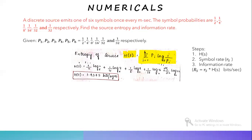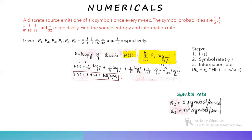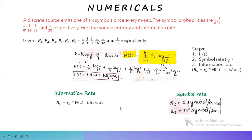Next is the symbol rate rs. Remember that rs must be in symbols per second, but here it is given in milliseconds, so we need to convert. RS equals 1 symbol per millisecond, which converts to rs equal to 10³ symbols per second. Then information rate RS equals rs·H(S) equals 10³ into 1.9375, giving 1937.5 bits per second.